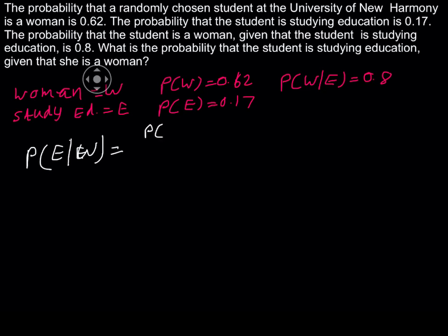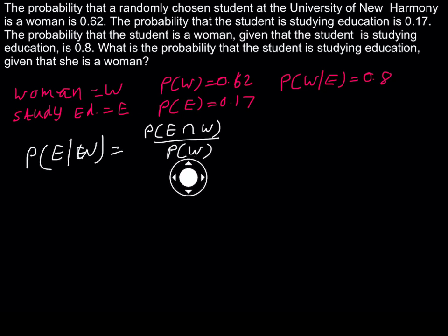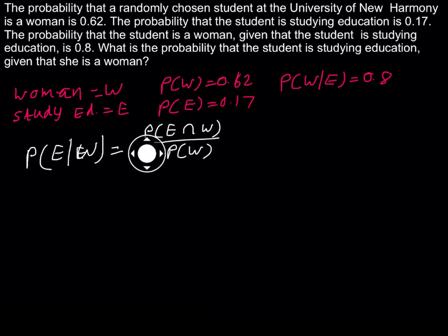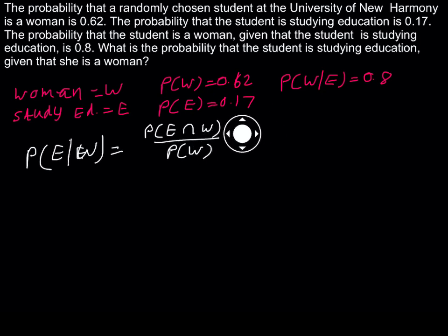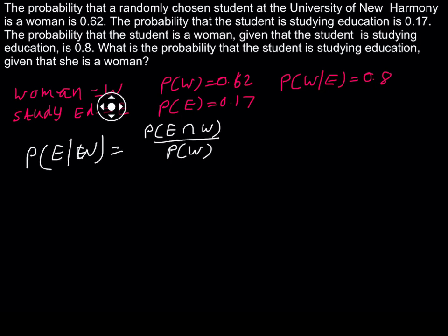We know the equation: probability of E given W equals probability of E and W divided by probability of W. We know the probability of W — that is 0.62. But the probability of E intersection W is not given directly, so how do we find it?